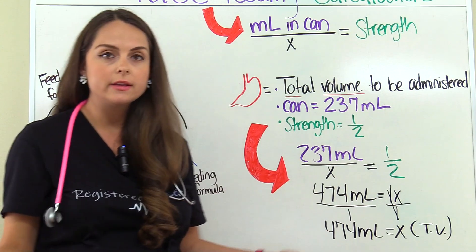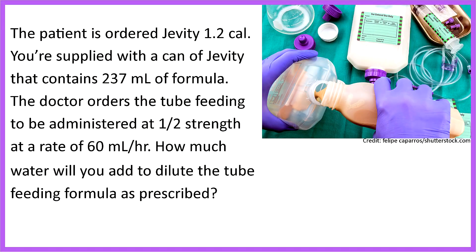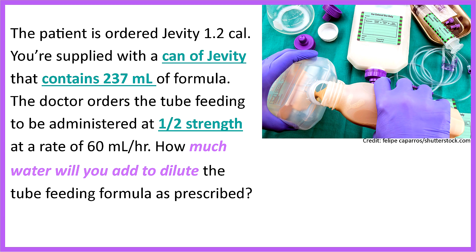So 474 milliliters is the total volume that's going to be administered to this patient. Now let's look at our next problem. The patient is ordered Jevity 1.2 cal. You're supplied with a can of Jevity that contains 237 milliliters of formula. The doctor orders the tube feeding to be administered at half strength at a rate of 60 milliliters per hour. How much water will you add to dilute the tube feeding formula as prescribed? This problem wants to know how much water we're going to add to the feeding formula to meet the specifications the doctor has ordered.